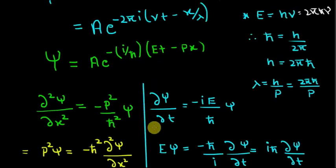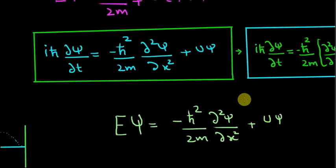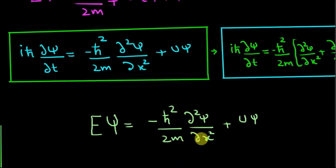If you want to derive a time-independent version, just remove the time thing from here and you get the time-independent version. That is E ψ equals minus ℏ² by 2m del² ψ by del x² plus U ψ. This is really important because we use this equation a lot, that is the time-independent version.